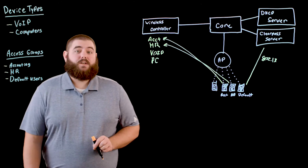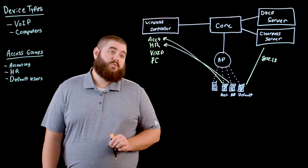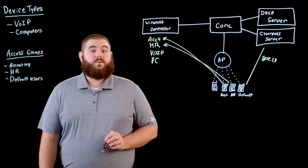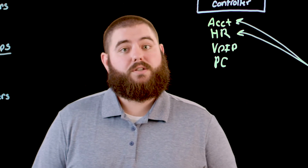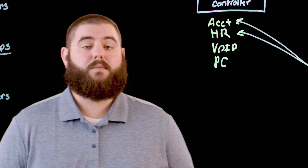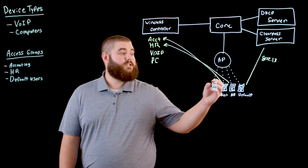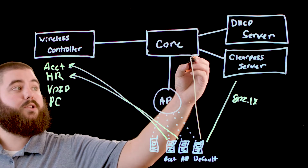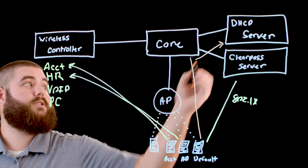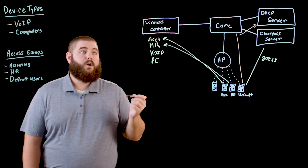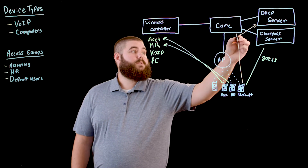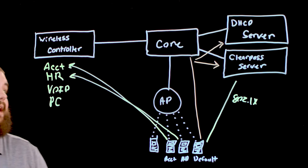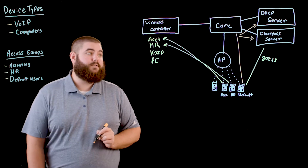Now let's look at how device profiling can be used to assign users into roles. In order to profile a device we need to have DHCP requests sent from the device to ClearPass. By default when a user obtains an address it performs a DHCP request which is sent to the default gateway, and using an IP helper is then redirected to the DHCP server. For our use we'll actually add a second DHCP helper that points towards ClearPass, and this allows ClearPass to obtain the same information and profile the device.